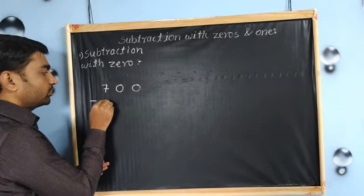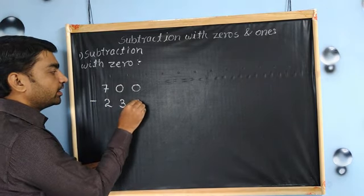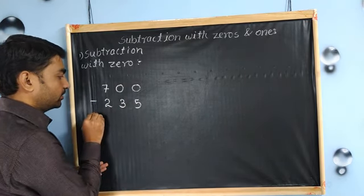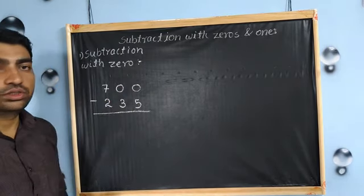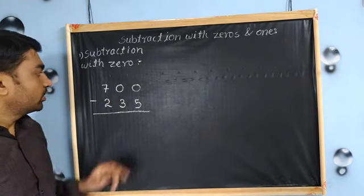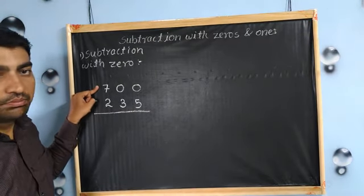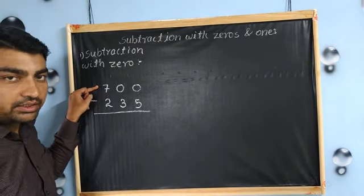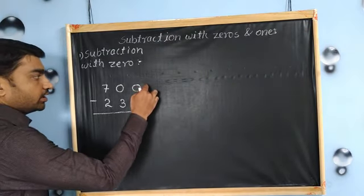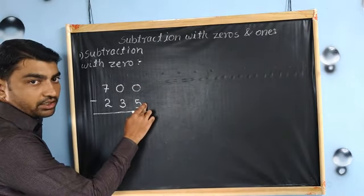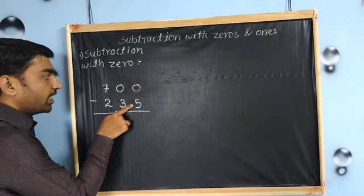700 minus 235. Now in this example, you can see there are two zeroes. To do subtraction, we will subtract the second number from the first number. So let's start subtraction from one's place. At one's place, zero minus five — the number is zero and we have to subtract five.